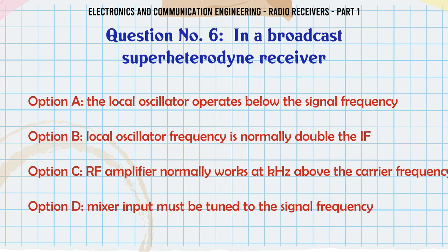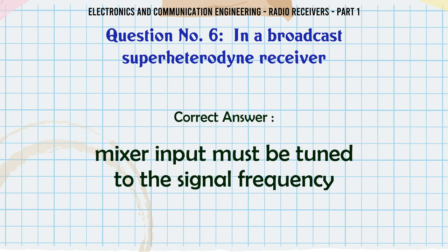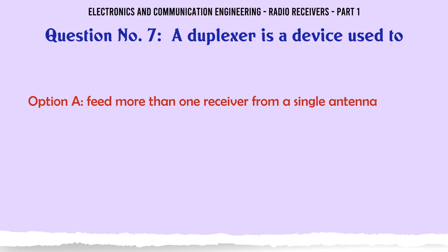In a broadcast superheterodyne receiver: a. The local oscillator operates below the signal frequency. b. Local oscillator frequency is normally double the IF. c. RF amplifier normally works at kHz above the carrier frequency. d. Mixer input must be tuned to the signal frequency. The correct answer is mixer input must be tuned to the signal frequency.